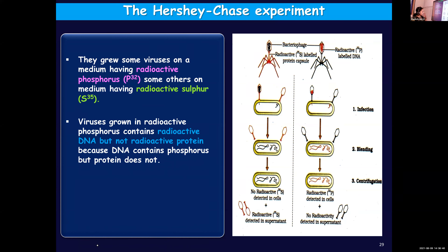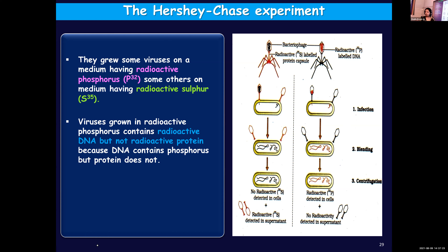Sulfur is an important constituent of protein. They had a confusion whether it was protein or DNA that is the genetic material. One important constituent of DNA is phosphorus — DNA is made up of polynucleotides, and one important constituent of nucleotides is the phosphate group. So phosphorus is found in DNA; it's a structural component of DNA but not of protein. Whereas sulfur is a component of protein but not of DNA — you cannot find sulfur in DNA.